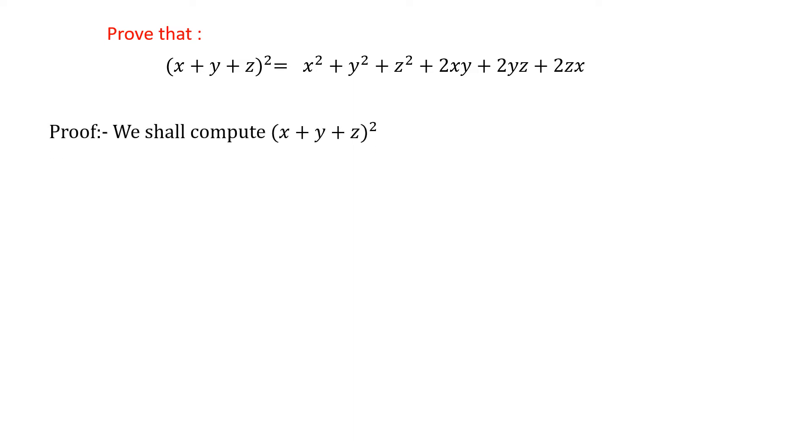First, we shall compute (x+y+z)². From this, we have to derive the right-hand side. A small thing we need to observe and implement: the first two terms x+y have to be recognized as one term, and z as the second term.